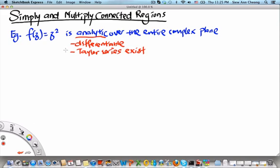And for a simple function like f(z) = z², this function is analytic over the entire complex plane. But unfortunately, a lot of functions are not analytic over the entire complex plane. They are only analytic in certain regions in the complex plane.